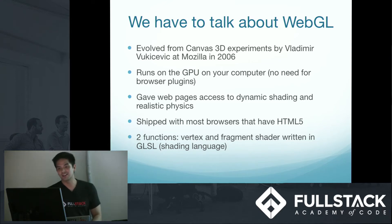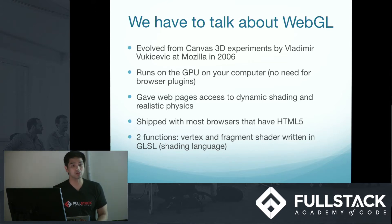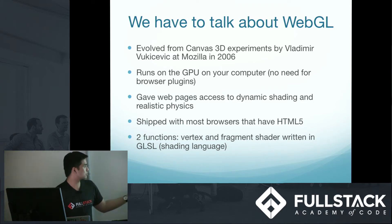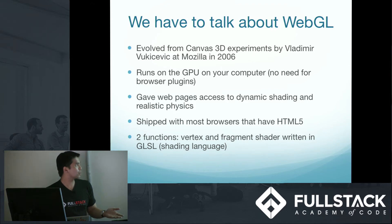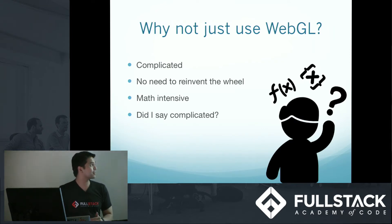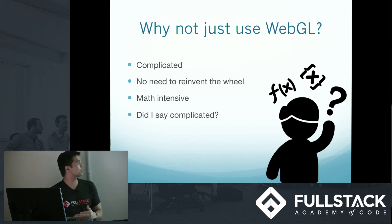So WebGL gave web pages access to dynamic shading and realistic physics, and it's already in most of our modern browsers, even though it's not an official HTML5 specification. WebGL is really centered around two functions: vertex and fragment shaders, written in the shading language GLSL. You might think — WebGL is just two functions? That's easy. No, it's not. Why not just use WebGL directly? Because it's complicated. It really uses a lot of math in its framework, and there's really no need to reinvent the wheel because we have all these libraries built on top of WebGL.